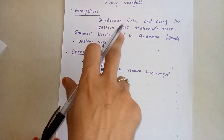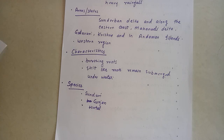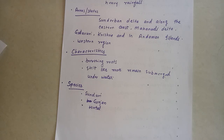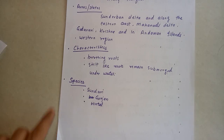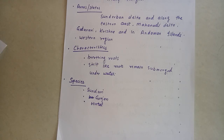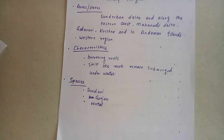Now see the area covered by these types of forests. Tidal forests occupy a large area of about 21,000 square kilometers in the Sundarban Delta and along the eastern coast, Mahanadi Delta, Godavari, Krishna, and in the Andaman Islands. They are also found in the western region. These forests occur in and around delta regions, estuaries, and creeks, and are prone to tidal influence. Found in areas flooded by tides, these trees can survive in fresh and brackish water.